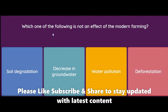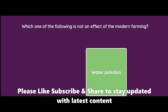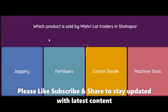Which one of the following is NOT an effect of modern farming? Soil degradation, decrease in ground water, water pollution, or deforestation? The answer is water pollution — it is not a direct effect of modern farming in this context.